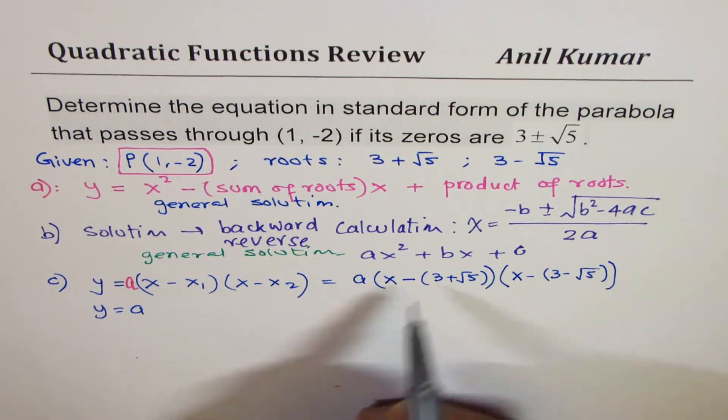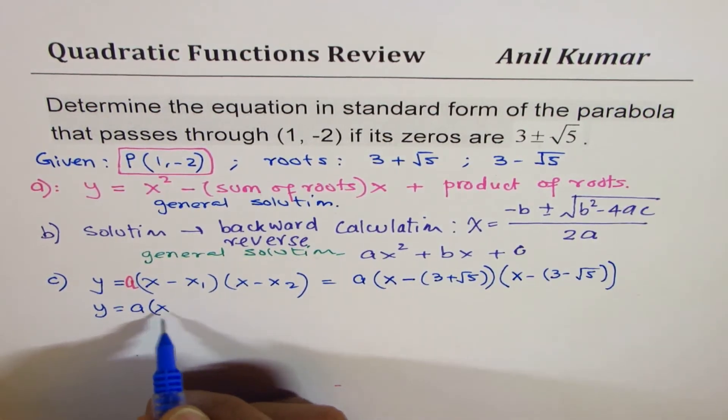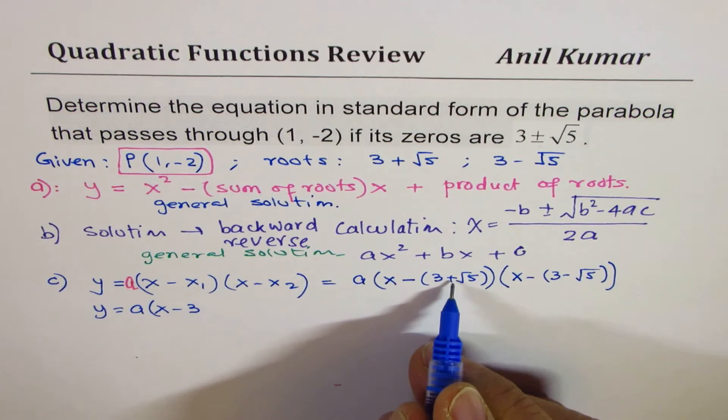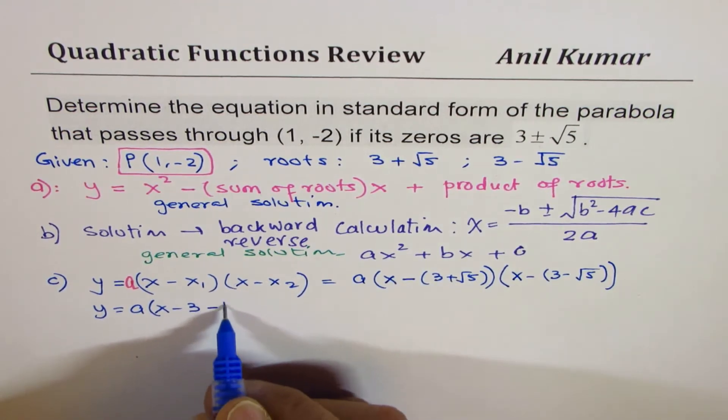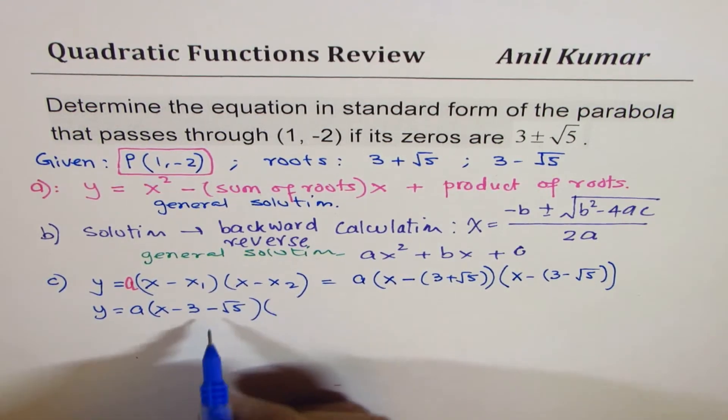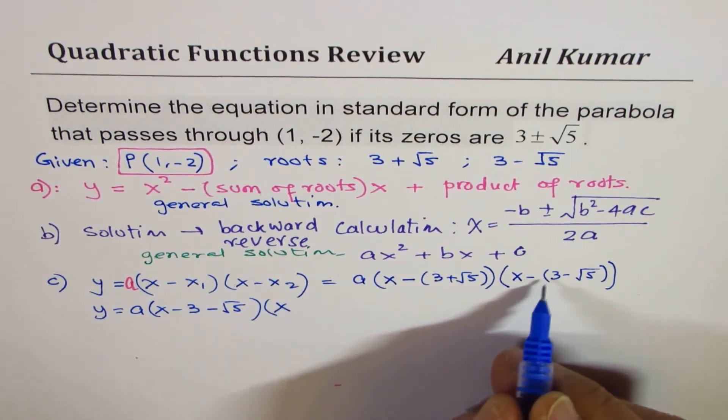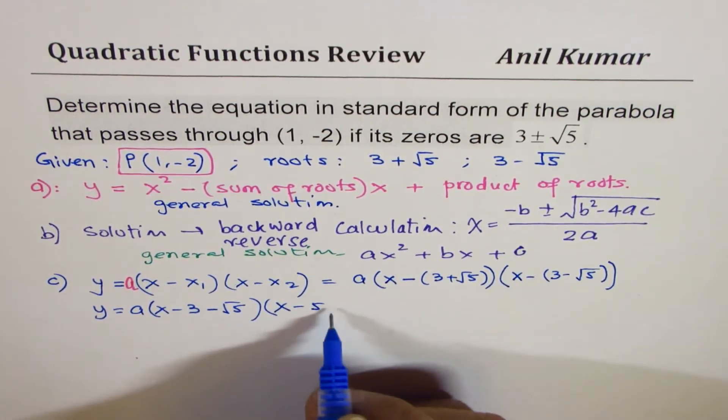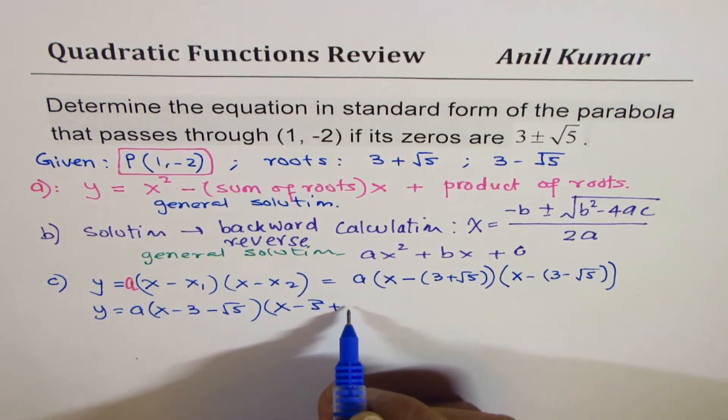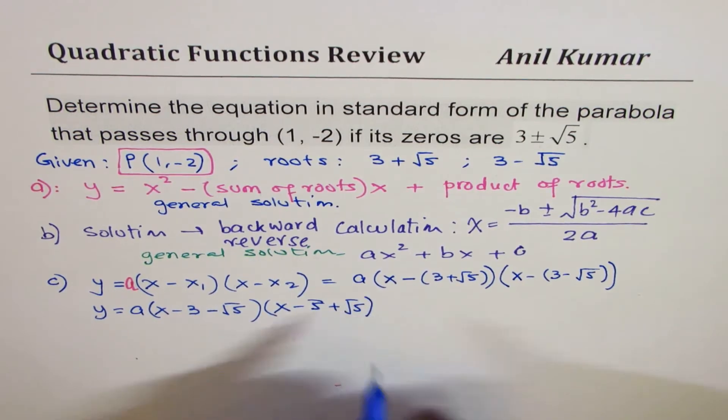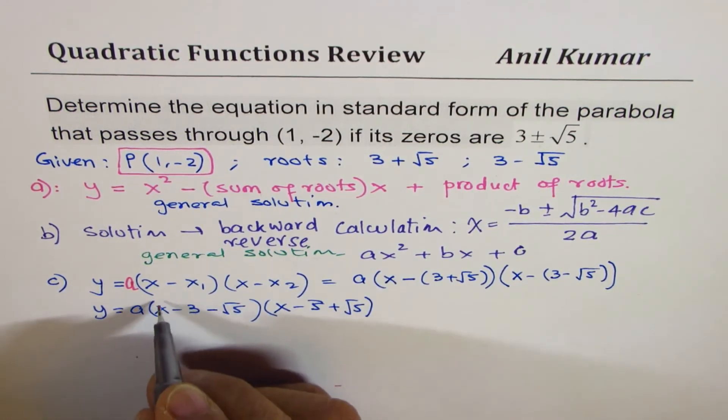When I open the bracket I get (x - 3 - √5)(x - 3 + √5). To expand this you can use these two are (x - 3) same thing, so you can use a² - b².